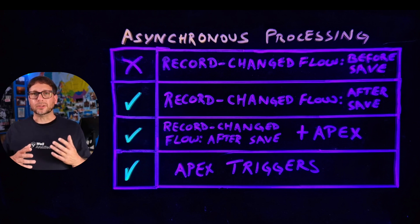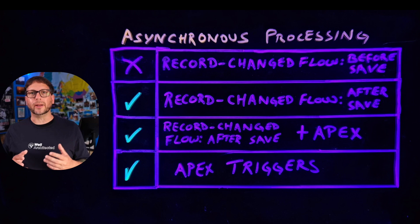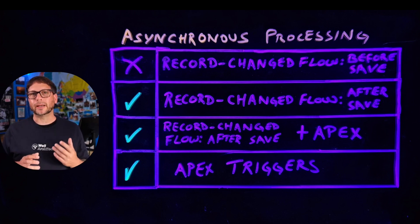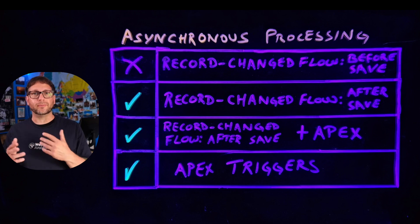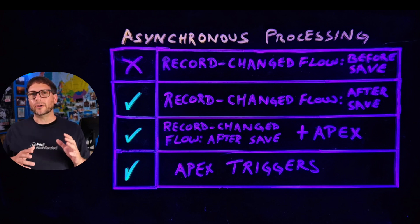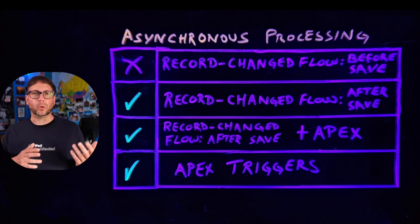When designing a solution that contains asynchronous processing, it's important to think about the entire process end-to-end and consider all the different scenarios you might encounter. For example, if you have to make an external callout to another system, what happens if that system isn't available, or if there's a timeout, or if the system returns a value that isn't valid? Thinking about how you'll handle those different cases will help you determine whether to take a low-code or a pro-code approach.